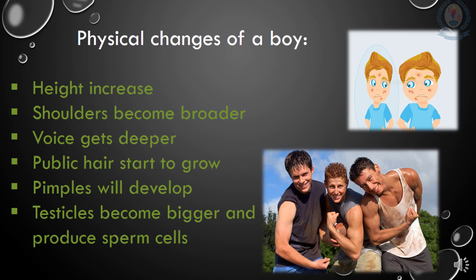Now let's learn about a few physical changes in a boy which occur during puberty. The height will increase suddenly and the shoulders will become broader, and the voice of a boy will get deeper. Pubic hair will start to appear on the legs, on the face, and under the arms. The skin will become oily and pimples may develop on the face. Also, the testicles will become bigger and will produce sperm cells.